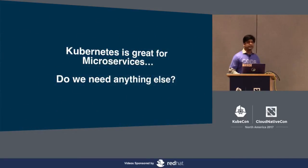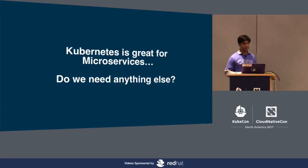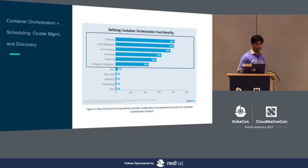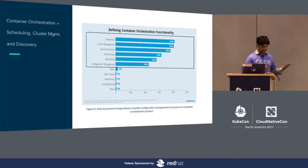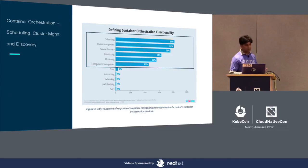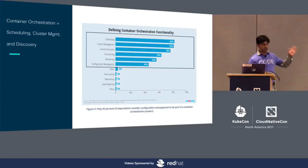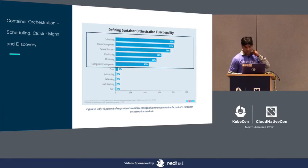So what we see is Kubernetes is great for microservices — but do we need anything else? That is a question a lot of people were asking. Kubernetes and microservices already handle a lot of your use cases. The top three functionalities a container orchestrator gives you are scheduling, cluster management, and discovery. But is that enough?